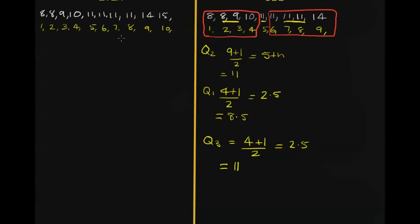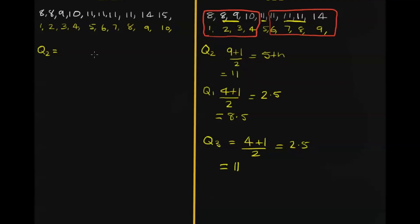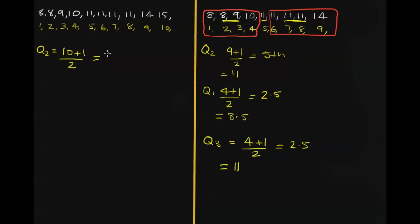So when we have an even set of scores, same deal, to find quartile 2. So we just take the total number of scores, which is 10 plus 1, divide it by 2. And that's going to give us the 5.5 score.